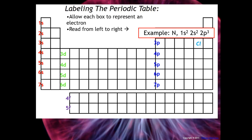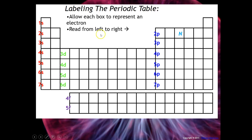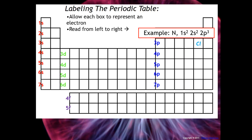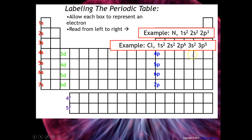Let's try chlorine. It would be 1s2, then 2s2, then 2p6, then 3s2, then 3p5. So that would be the configuration for chlorine.